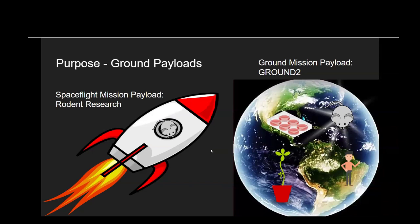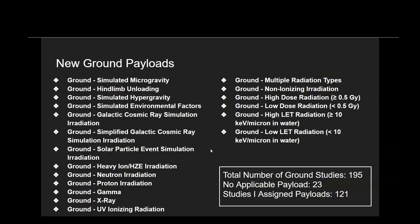Payload traditionally refers to specific data-producing elements on a spaceflight mission; however, we've co-opted this term to group together studies to make them more searchable. Here's a list of the new ground payloads we're currently implementing. This summer, we looked at a total of 195 studies, 23 of which did not have an applicable payload out of this list. To emphasize the work of summer interns on this project, I personally assigned payloads to 121 of these studies.